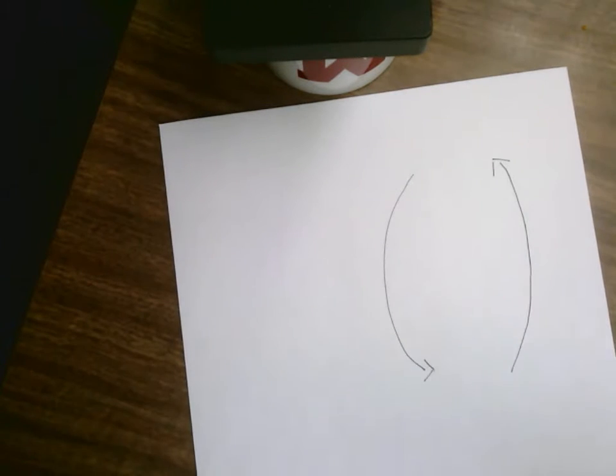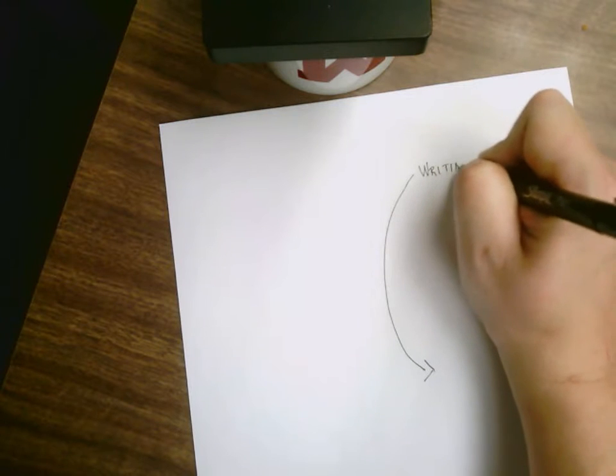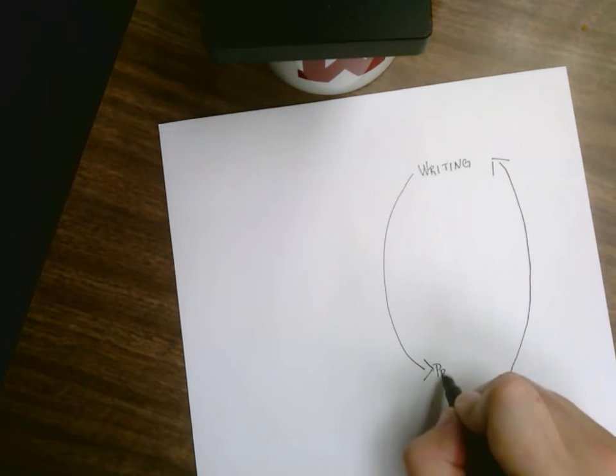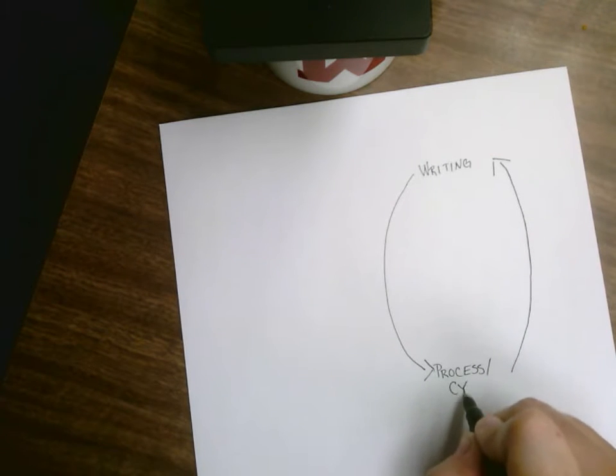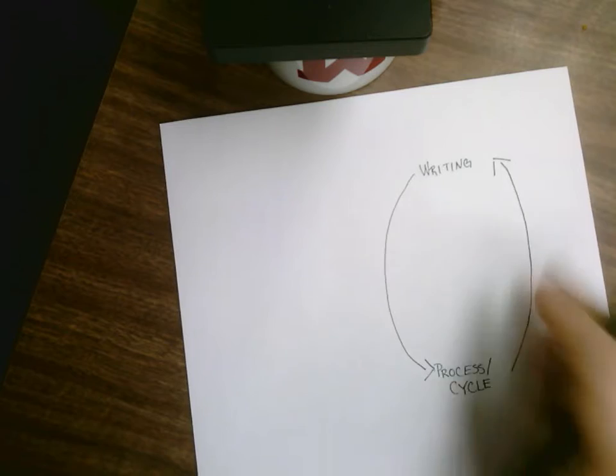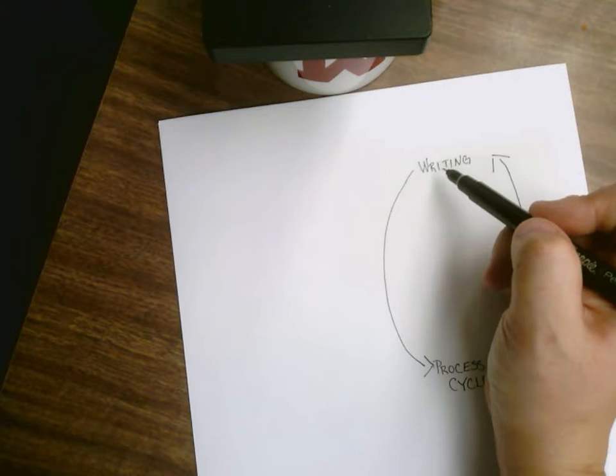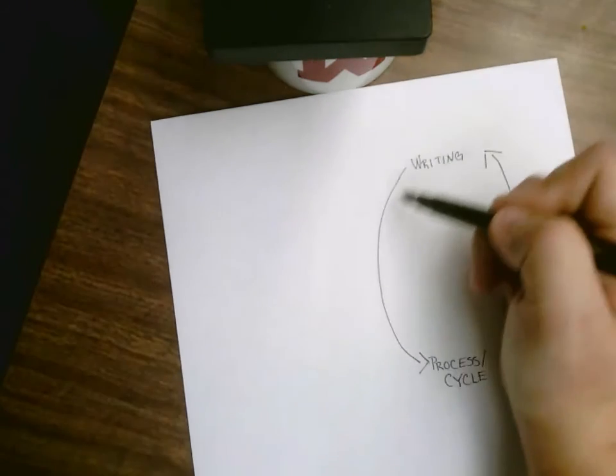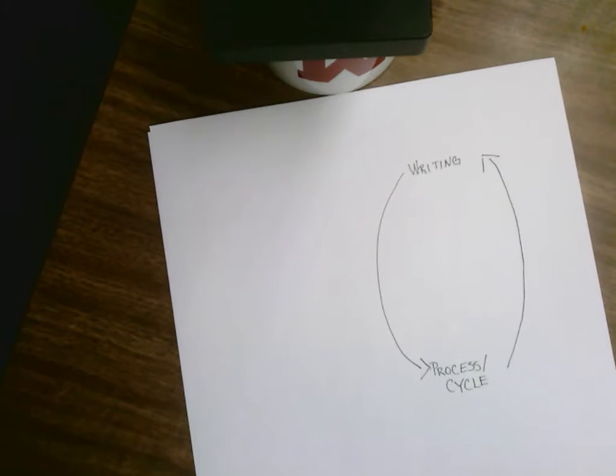It's considered my writing process. Some people refer to it as a cycle because of the fact that you may start at one point and go back through the steps because of various reasons. Some reasons that you may have to go back through it is you may get to a point where you get stuck.